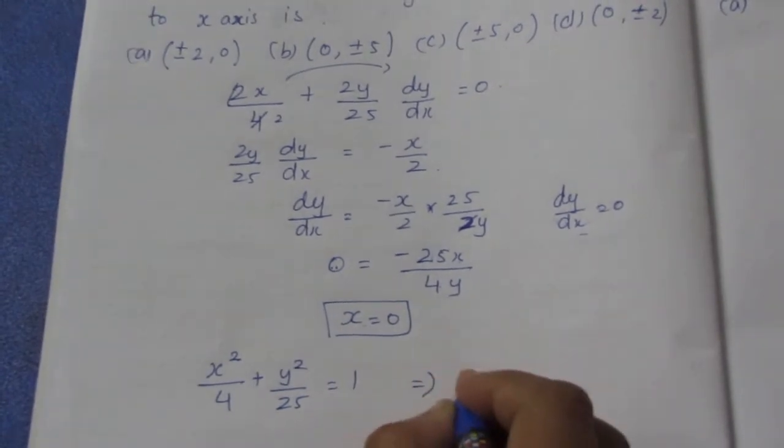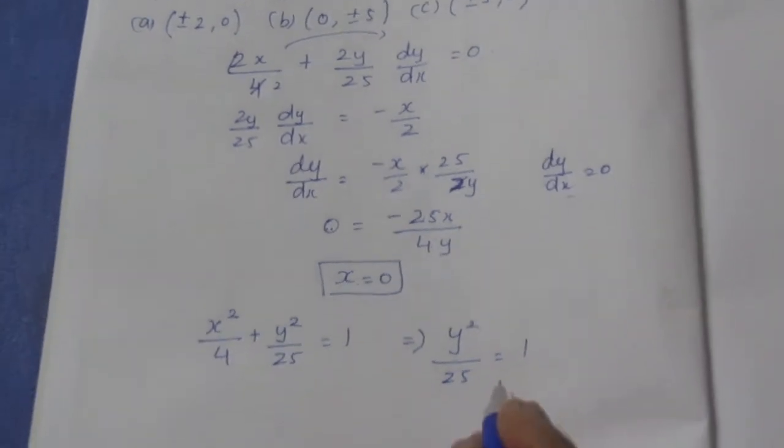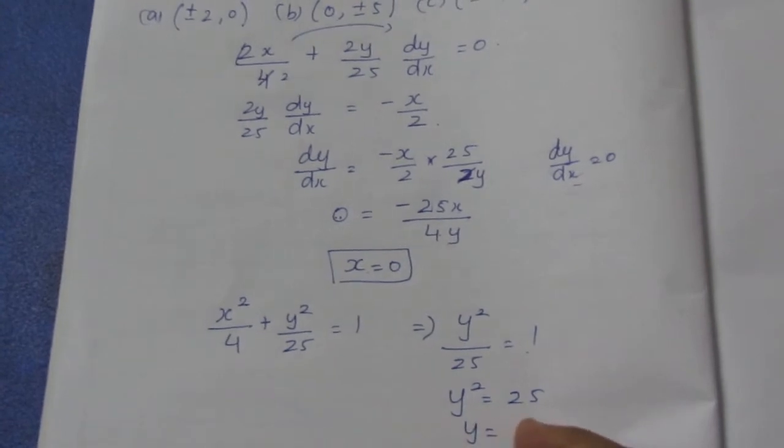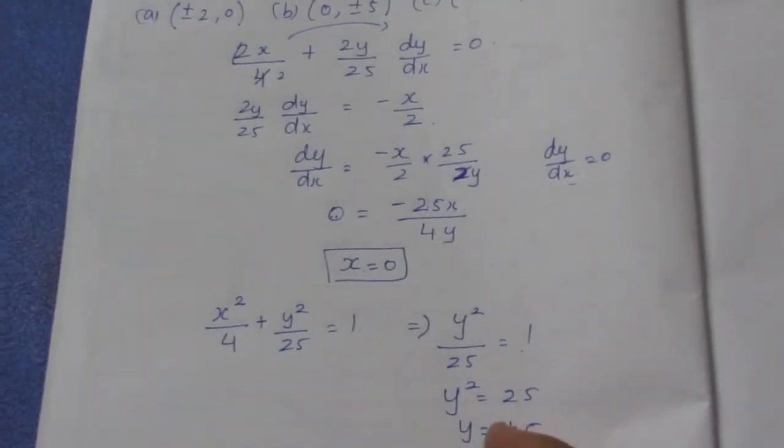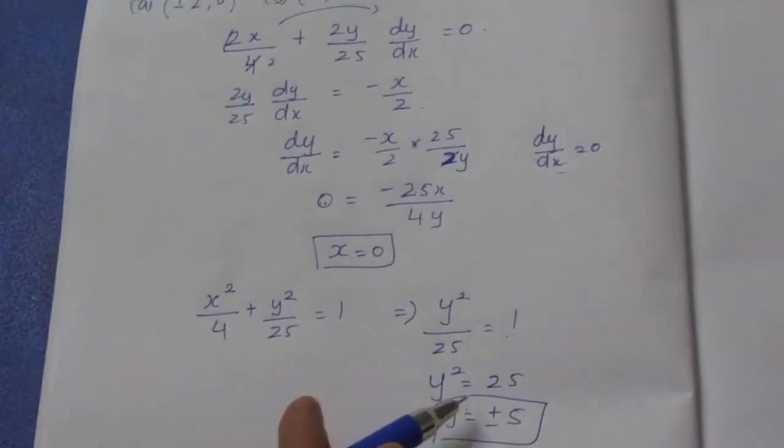Bringing 25 to this side, it comes as y² = 25. y is equal to root 25, which is ±5. So we know that x is 0 and y is ±5.